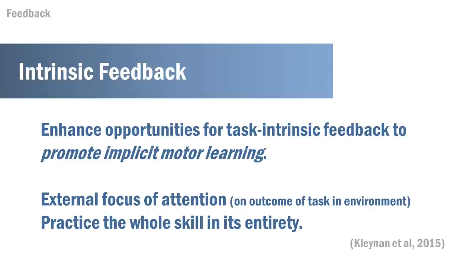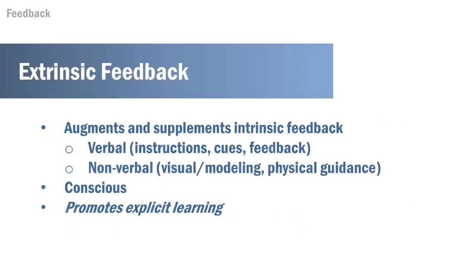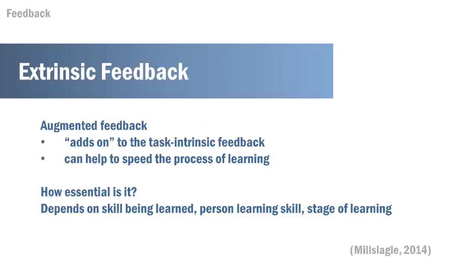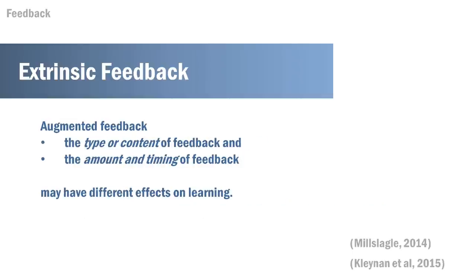Extrinsic feedback, on the other hand, augments and supplements the intrinsic feedback and is related to conscious learning. This involves verbal instructions, visual observational learning with modeling, and/or physical guidance. The outcome with augmented feedback will depend on the type or difficulty of the skill, the person's ability, and their stage of learning, but if done correctly it can help speed the process of learning. We will look at the research on extrinsic feedback by examining both the type or content of the feedback and the amount and timing of the feedback, as these influence outcome.